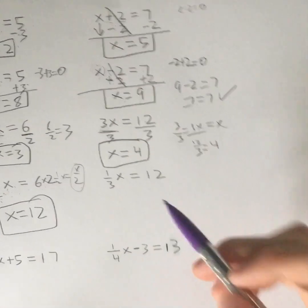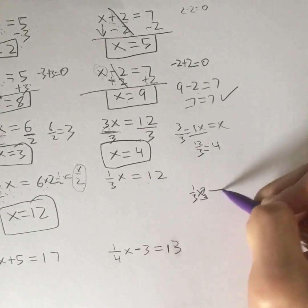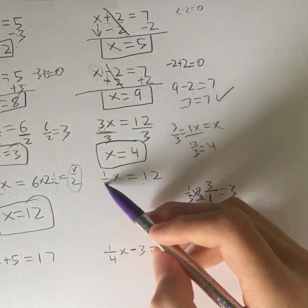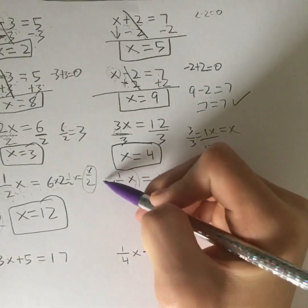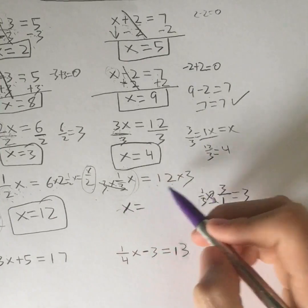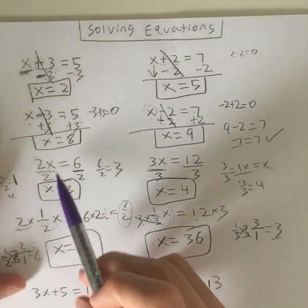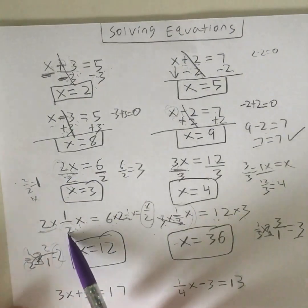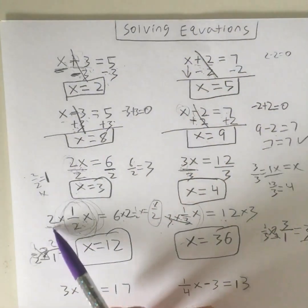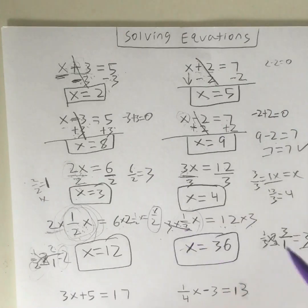Now let's look at this example: one-third x is equal to 12. The reciprocal of 1 third — we flip the numbers, so on top is 3, on the bottom is 1. 3 over 1 equals 3. Because it's a division question, we multiply both sides by 3. 3 times one-third gives us 1x, or x, is equal to 12 times 3. 12 times 3 is 36, and that's your answer. Remember: for a multiplication question you divide; for a division question, you multiply by the reciprocal.